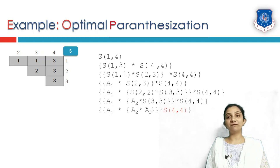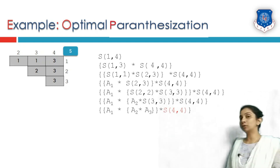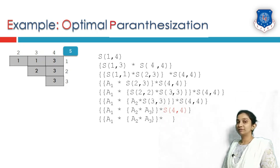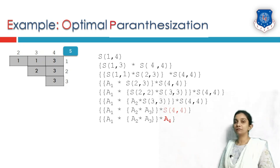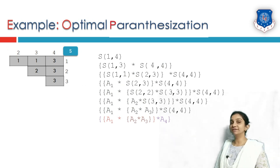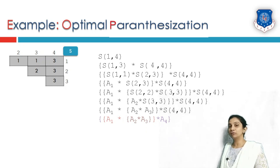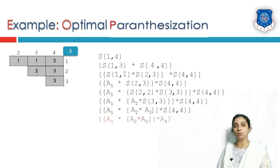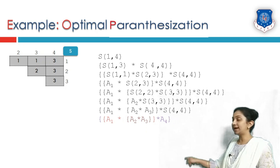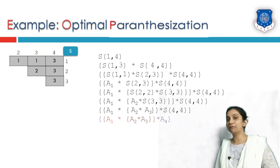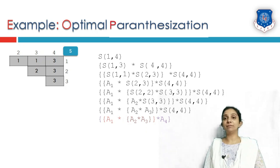The next term is s(4, 4). Since row 4 equals column 4, we simply write A4. The final result shows that A2 and A3 get multiplied first, then A1 is multiplied with that partial result, and finally that result is multiplied with A4. So the order of parenthesization is: (A2 × A3), then (A1 × (A2 × A3)), then multiplied with A4 — that is the complete optimal order of multiplication.